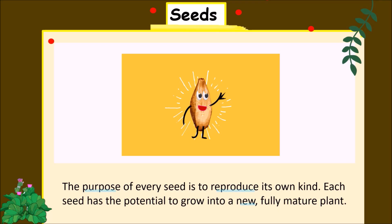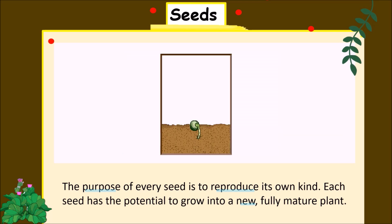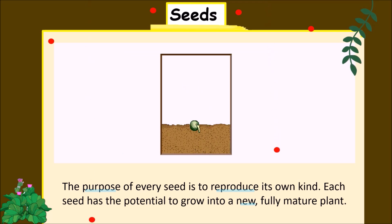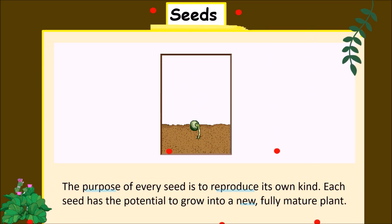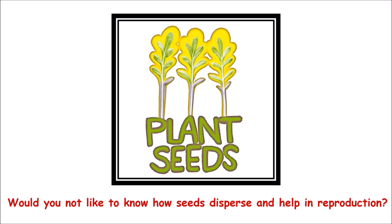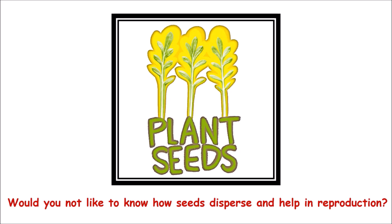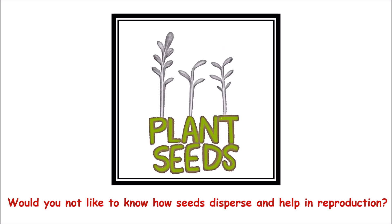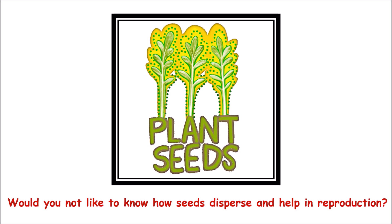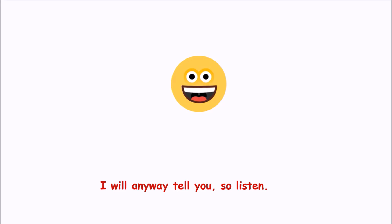The purpose of every seed is to reproduce its own kind. Each seed has a potential to grow into a new, fully mature plant. So, would you not like to know how seeds disperse and help in reproduction? I will anyway tell you, so listen.